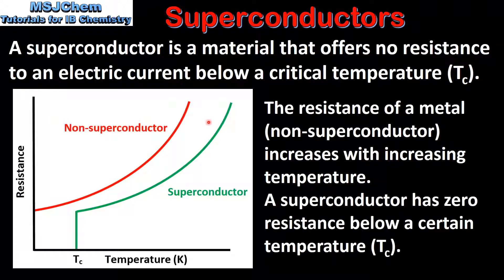Next we look at the green line on the graph. The resistance of a superconductor decreases with decreasing temperature. However, a superconductor has zero resistance below a certain temperature, which is known as the critical temperature.